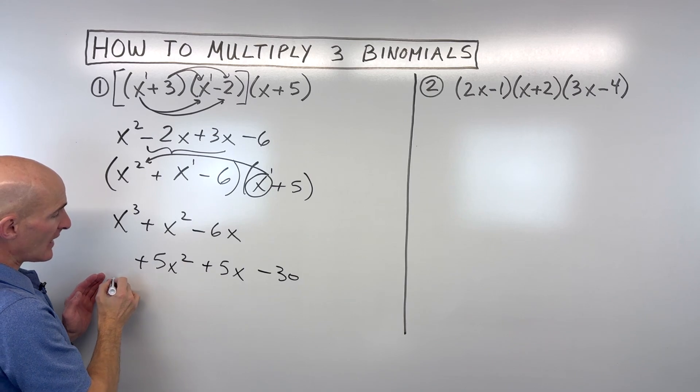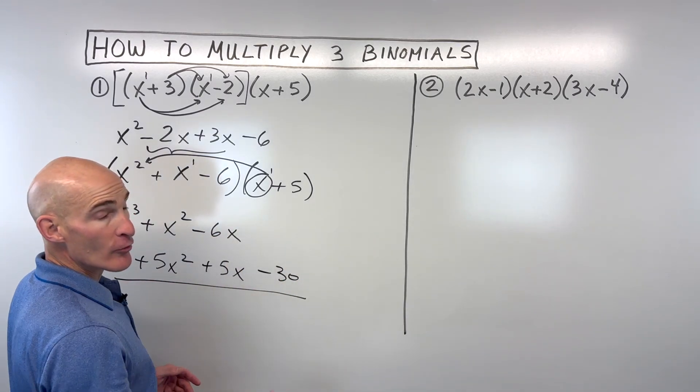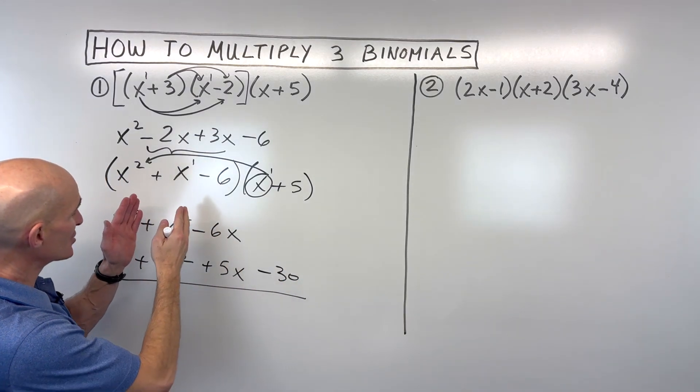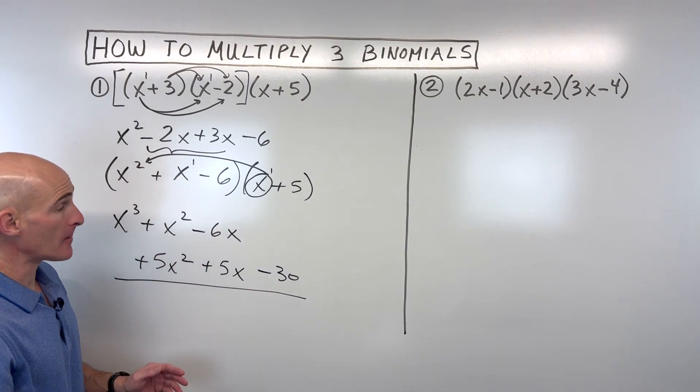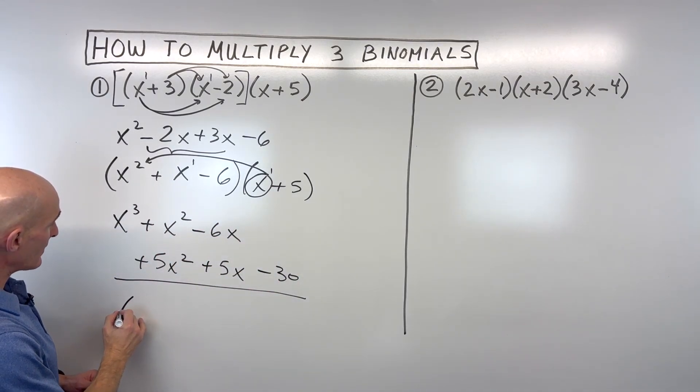Now, you don't have to line them up the way that I did here. You can just put them in a row if you want. But the reason I did this is just to kind of line up the x squared terms, the x terms, etc. So it'll make it a little bit easier when we combine like terms.